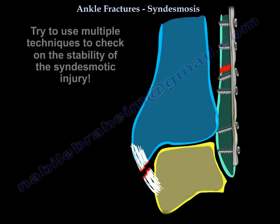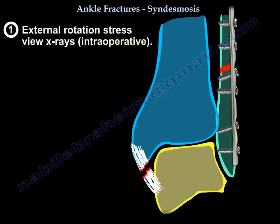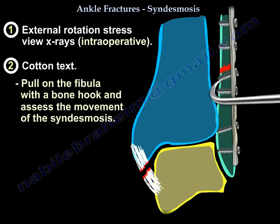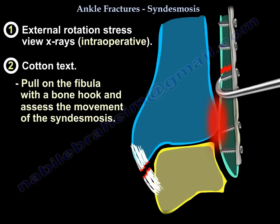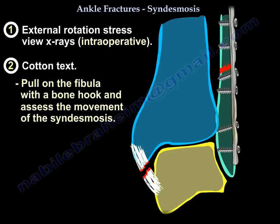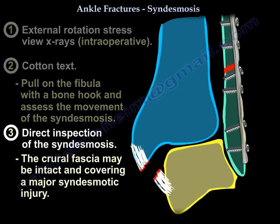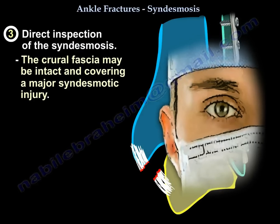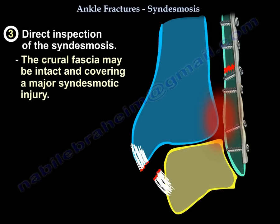Try to use multiple techniques to check for syndesmotic injury. One of them is the external rotation view — the intraoperative one. The other one is the Cotton test: get a bone hook and pull on the fibula and observe the movement. The third is direct inspection of the syndesmosis. Make sure the periosteum may be intact and covering a major syndesmotic injury — I've seen that many times.